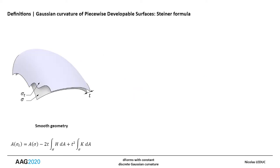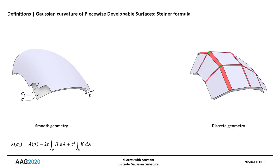In the case of a surface, the area of the normal shift is a quadratic polynomial involving total Gaussian and mean curvature. This formula was already used by Bobenko et al. to establish that Gaussian and mean curvature are contained within different geometric entities for polyhedral surfaces.